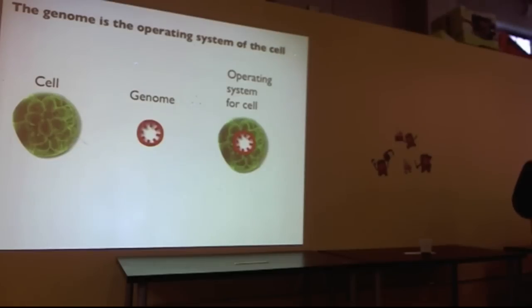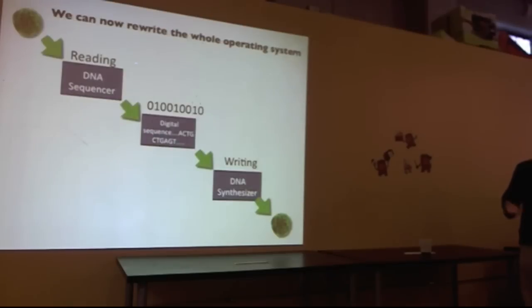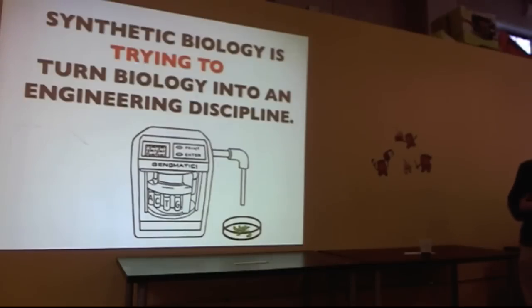The genome is the operating system of the cell. So the genome encodes all of the information that controls the cell, which proteins are produced, which enzymes are made, the function, the structure. And just in the last three years we've now, it's been seen that we can rewrite that entire operating system of the cell. And this is work by Craig Venter's group. Not only can we read the entire sequence of the genome, but we can now write the entire sequence of the genome as well.